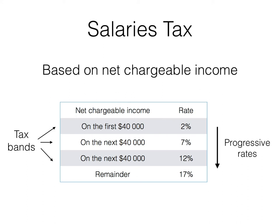Hello students, today we are going to talk about how to find the salary tax of Hong Kong taxpayers, and it is based on the net chargeable income of the taxpayer. This is the table, and it is based on a progressive rate — that means if your net chargeable income is larger, then the tax rate of that part will be greater.